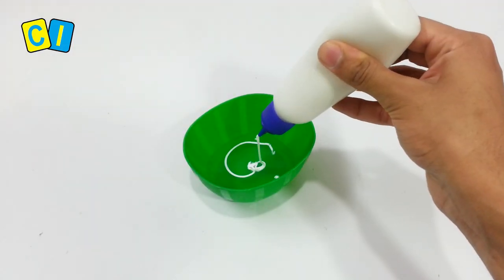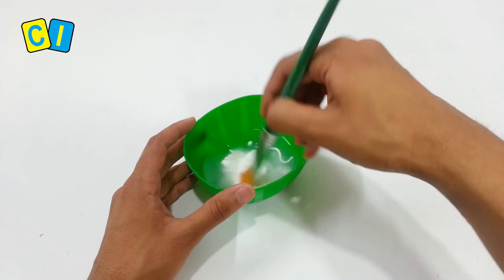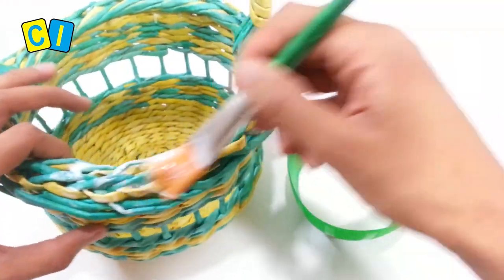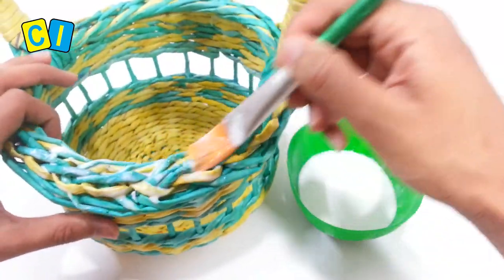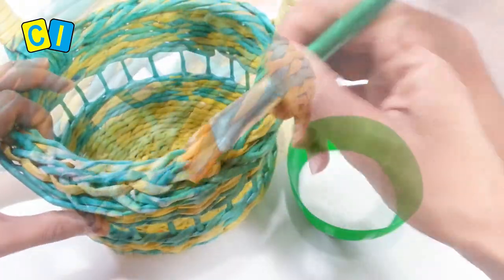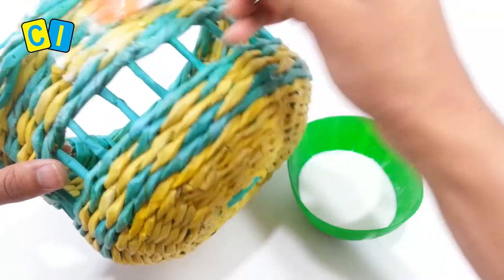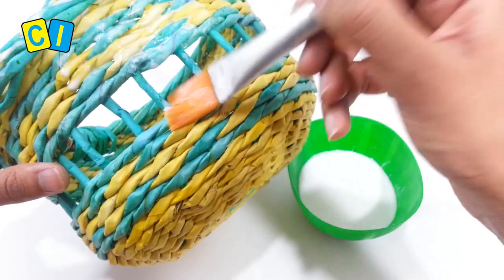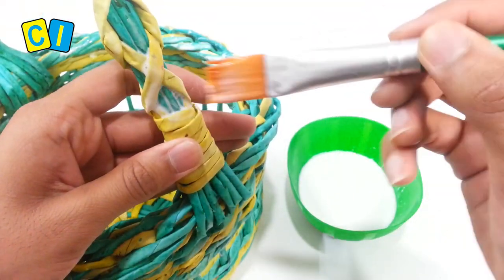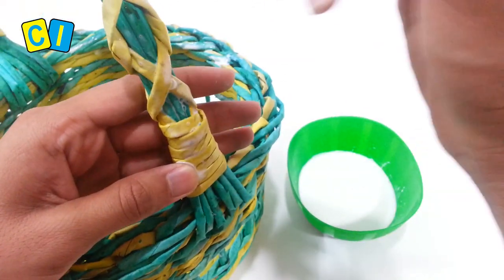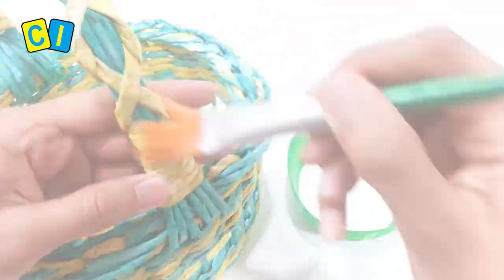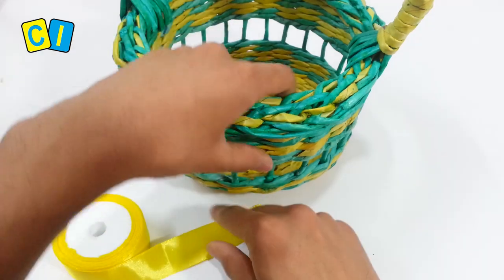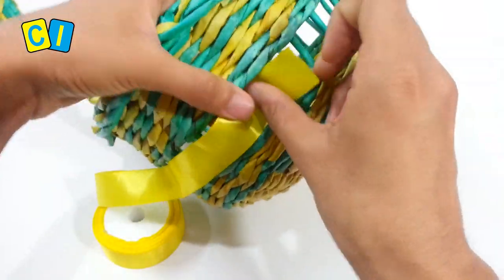Mix glue and water in one is to one ratio. Cover entire basket with this mixture. After it dries, weave a ribbon using basic weave and add this.